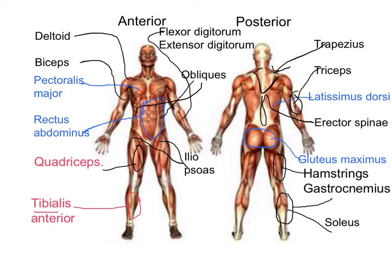The other muscle is the extensor digitorum, and this is on the exact opposite side — it's on the posterior side of your forearm. It's attached to the fingers by long tendons over the posterior of the hand. It's responsible for extension of the fingers and extension of the wrist. You use it when you'd be setting up a shot in volleyball.